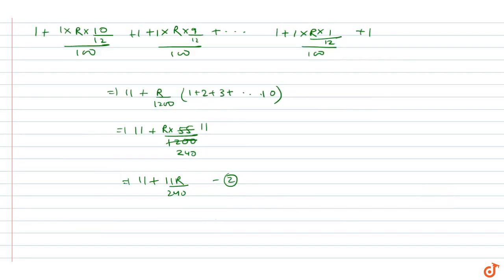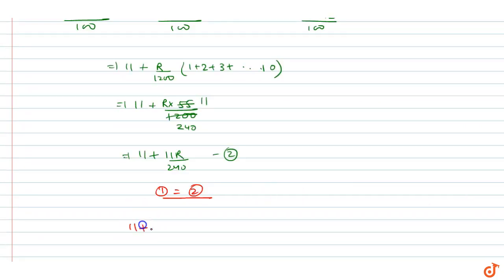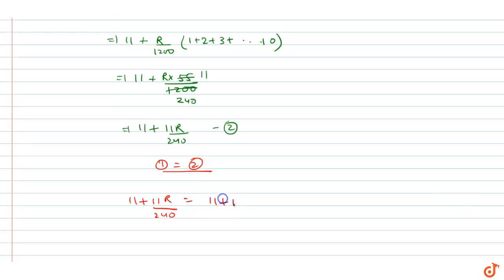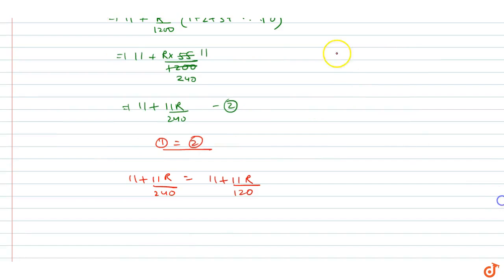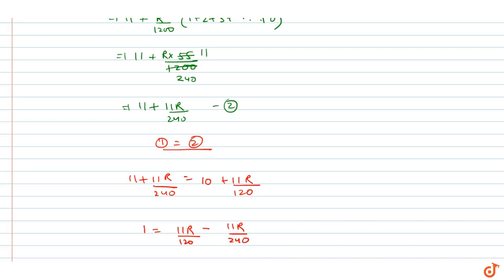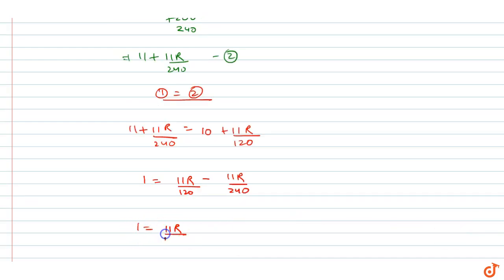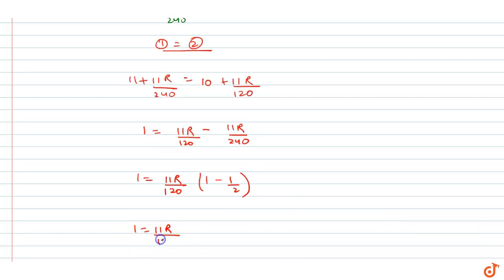Equation 1 and Equation 2 both denote the total amount, so they are equal: 11 + 11R/240 = 10 + 11R/120. A correction: the first term on the right is 10, not 11. So: 1 = 11R/120 − 11R/240. Taking 11R/120 as common: 1 = 11R/120 × (1 − 1/2) = 11R/120 × 1/2.